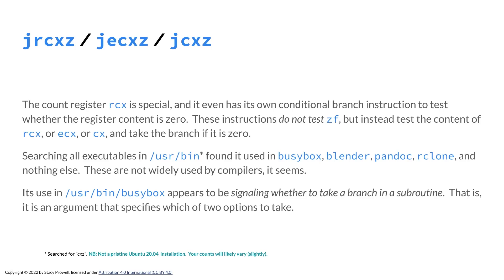Searching through all of the executables in /usr/bin, I found this used in BusyBox, Blender, Pandoc, Rclone, and nothing else. This probably means compilers in general don't use it or don't necessarily generate it. I didn't use a pristine Ubuntu installation and just searched for JCXZ. When it's used in BusyBox, it appears to be signaling whether to take a branch in the subroutine — that is, an argument that specifies whether to take one of two options.